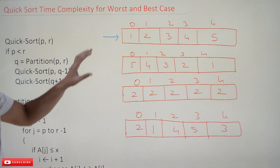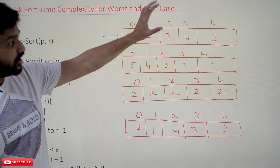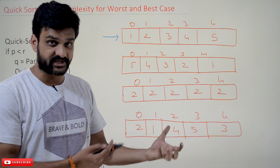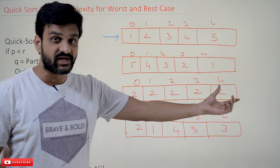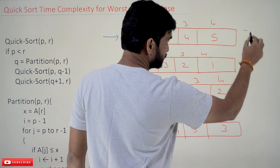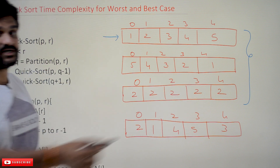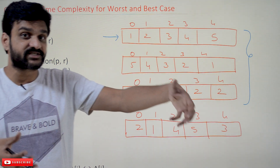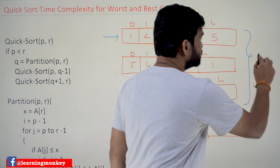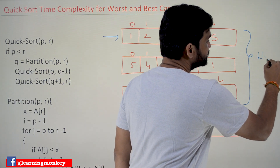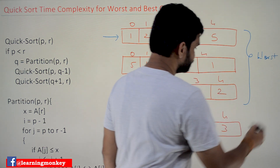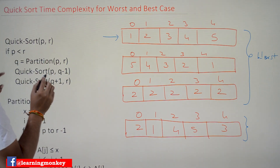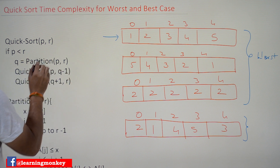In quicksort, if the elements are already in sorted order, or if all the elements are equal, this is going to be the worst case scenario. For almost every other algorithm, elements in sorted order is considered the best case — but for quicksort, this is the worst case. We will try to understand why.